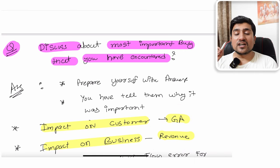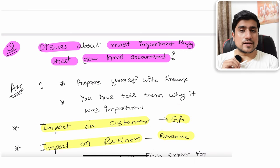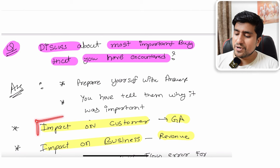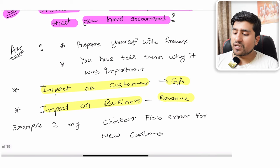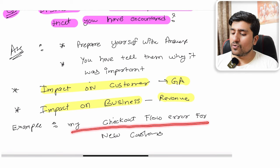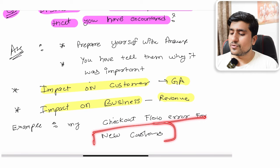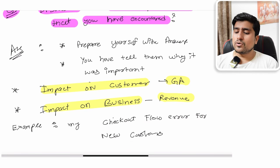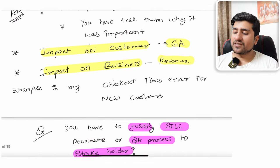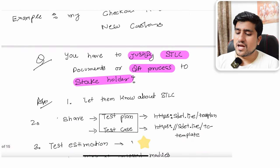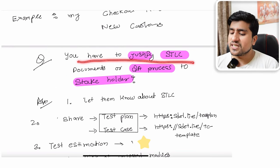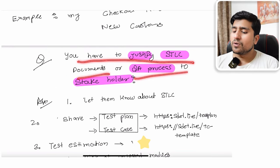Impact on the customer can be measured using Google Analytics, and impact on the business usually ties directly to revenue. For example: in the checkout flow, I found errors affecting new customers — new customers were not able to sign up or complete a purchase, resulting in a direct revenue loss. That is why it was a very important bug. Always frame your answer using these two parameters.